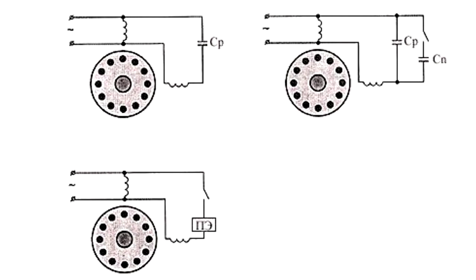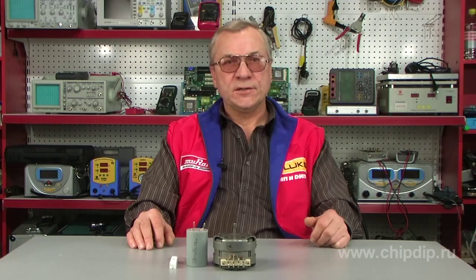Motors with starting elements are another type of induction motors. Here the starting elements are represented by an increased resistance starting winding and a starting capacitor. Motors with increased resistance starting winding are simple in their construction and rather cheap, and they come without an additional phase shifting element.